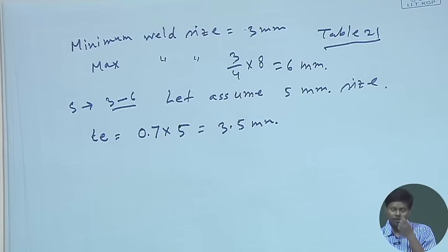We will design the joint to develop its full strength. For calculating full strength, we find the tensile capacity of the angle. If we equate this full tensile strength with the weld strength, we can find the required weld length.